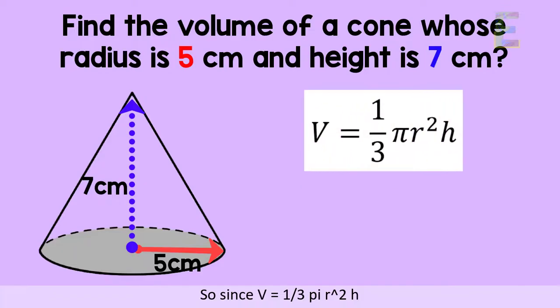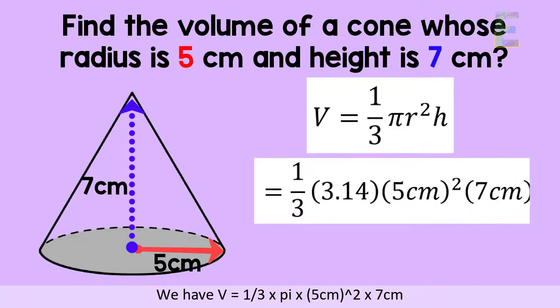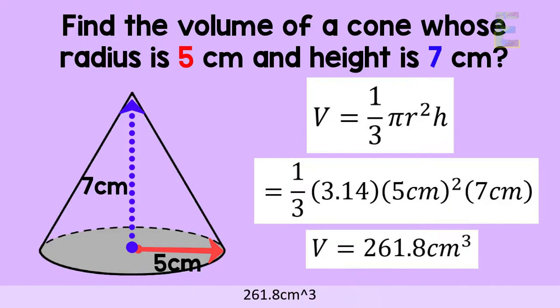Since v is equal to one-third pi r-squared h, we have v is equal to one-third times pi times 5 cm squared times 7 cm, which gives us the final answer of 261.8 cubic centimeters.